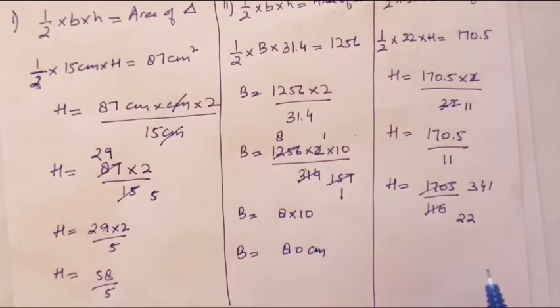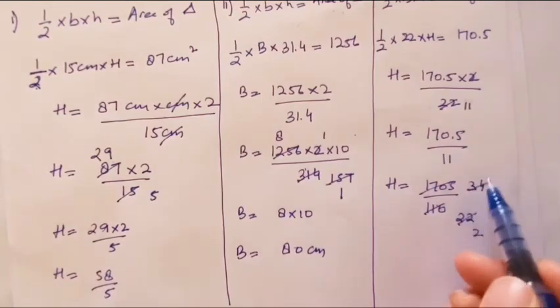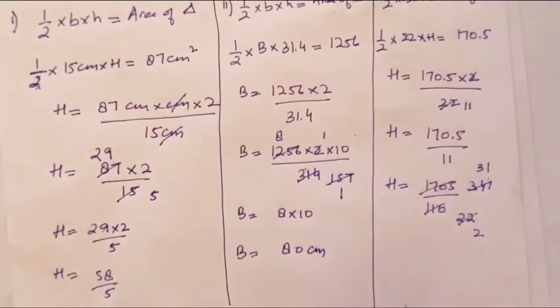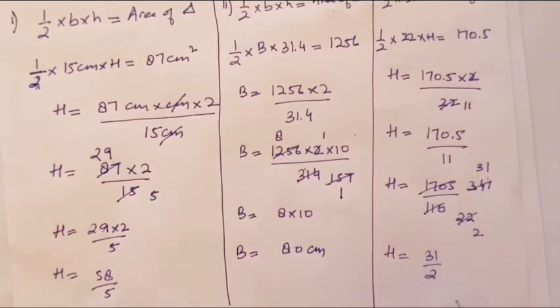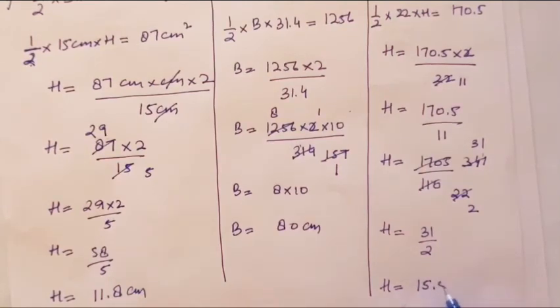Next, try with 11. 11 times 2 is 22. 11 times 3 is 33, 34, 1 left. 11 times 1 is 11. Yes, so H equals 31 upon 2. When we divide 31 by 2, this will be: 2, 1 times 2, 2, 5 times 10, 2, 5 times 10, 15.5.